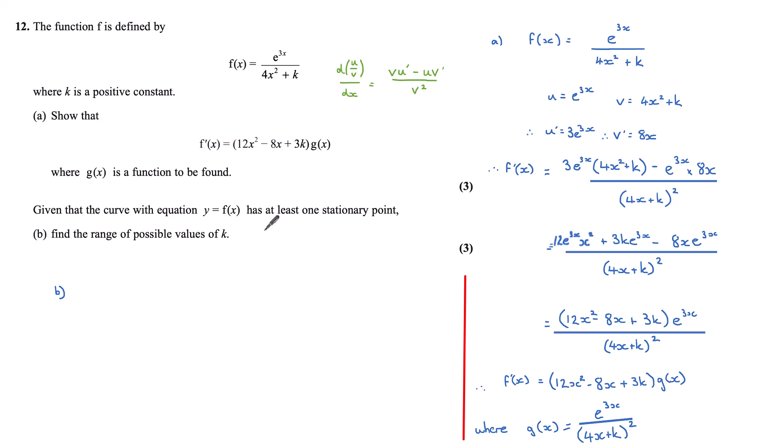Well, if it has a stationary point, then f'(x) must equal zero. So at a stationary point on the function, the gradient of that point would be zero. So we could put f'(x) equal to zero.